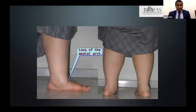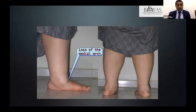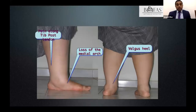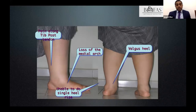Clinically, you see loss of medial arch and Pes Planus. The female patient has heel in valgus, complains of pain along the tibialis posterior tendon, and when asked to go on tiptoes or perform a single-stance heel raise, she is unable to do so. These are the cardinal signs of tibialis posterior tendon insufficiency or adult acquired flatfoot.